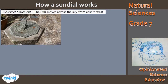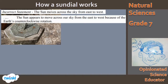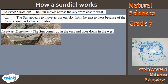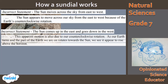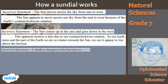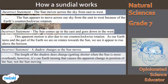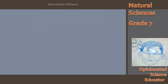Just to correct some incorrect ideas: Does the sun move across the sky from east to west? No. The sun appears to move across the sky from east to west because of the earth's counterclockwise rotation. It's also incorrect to say the sun comes up in the east and goes down in the west — this apparent motion is also due to the counterclockwise rotation of the earth, and that's why it appears to rise above the horizon. The shadow changes as the sun moves, but it's the earth's turning that causes the apparent position of the sun to change, which then results in the shadow's change in length.